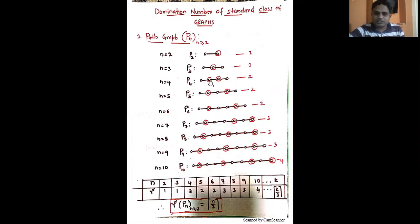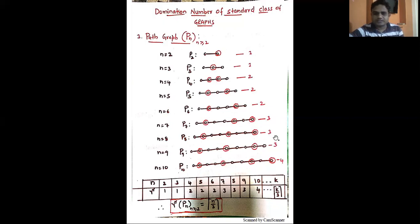For n equal to 4, these two vertices are enough to cover the remaining vertices, therefore the domination number of P4 is 2. Similarly for P6, these two are the minimal dominating set, so the domination number of P6 is 2. For P7, we need three vertices; for P8, three vertices are again enough; for P9, three vertices; and for P10, we need four vertices, so the domination number of P10 is 4.